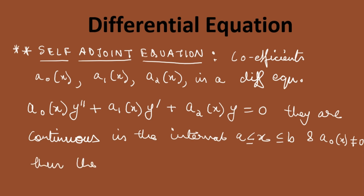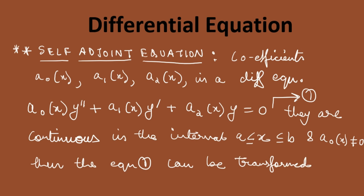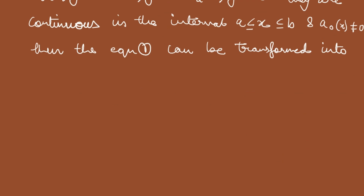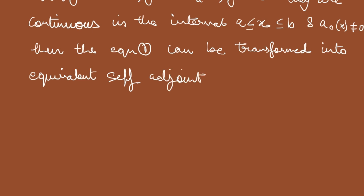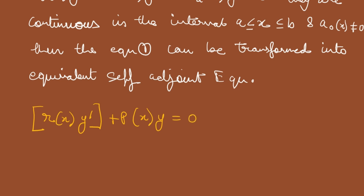Then the equation (1) can be transformed into an equivalent self-adjoint equation. And how does the equation look — let's do that with the yellow color. This is how the equation looks: [r(x)·y']' + p(x)·y = 0.